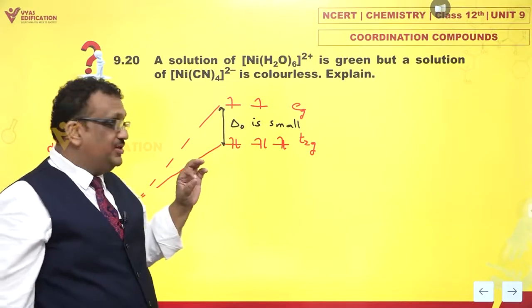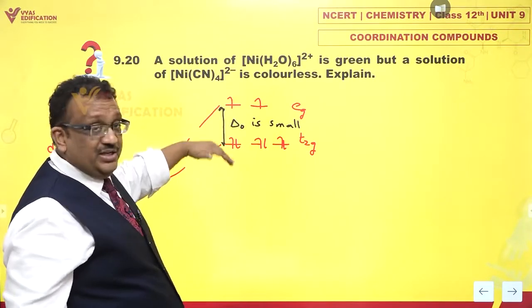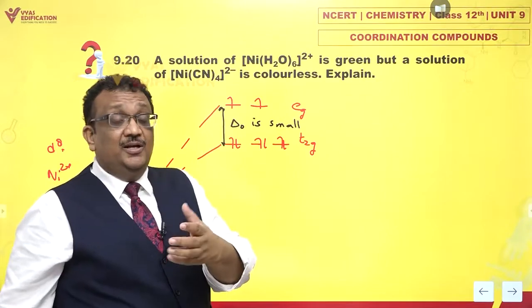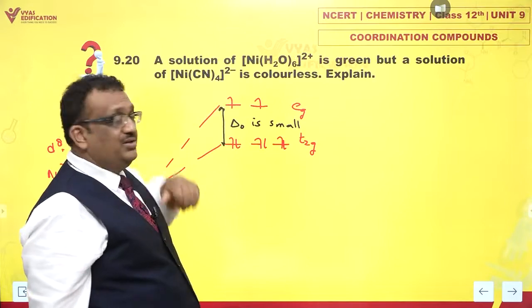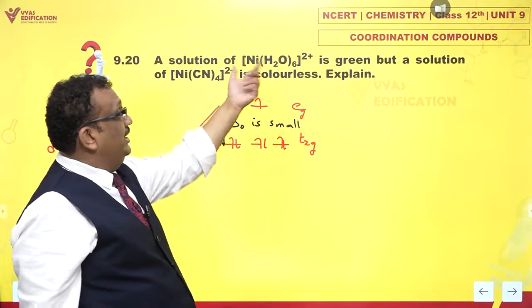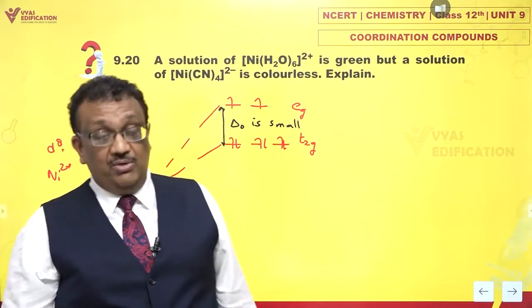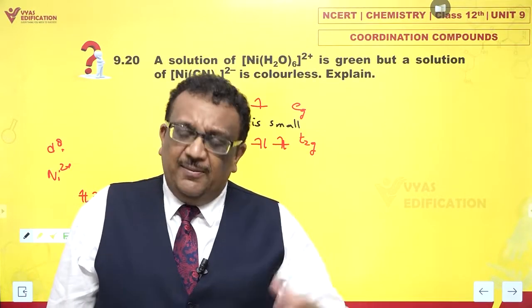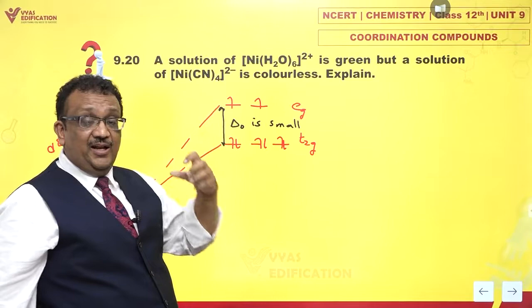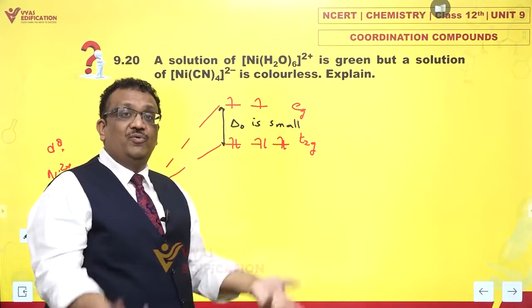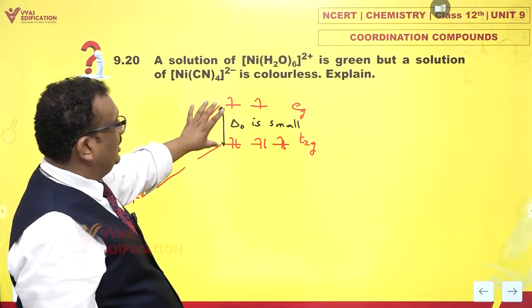Negligible energy is required for excited state. That means different photons or low energy photons are sufficient for causing this excitation. And that is why nickel's aqua complex looks green. Why? Because it absorbs red photons. And if red color is taken away from white light, the remaining portion of light appears greenish in color.